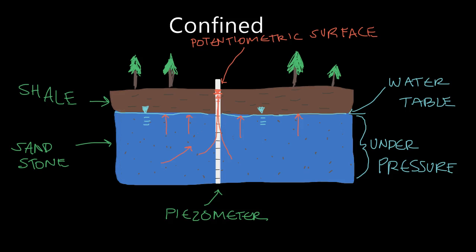Maybe the water in this confined aquifer is under so much pressure that when we puncture it with this piezometer, it's actually going to flow up out of the well to the surface. And that's what we call a flowing artesian well — when the water pressure is so great in the aquifer that it actually flows up to the surface, beyond the elevation of our well head.